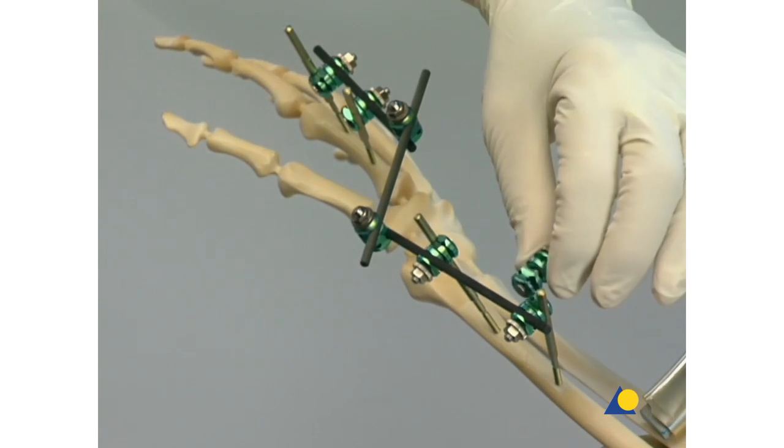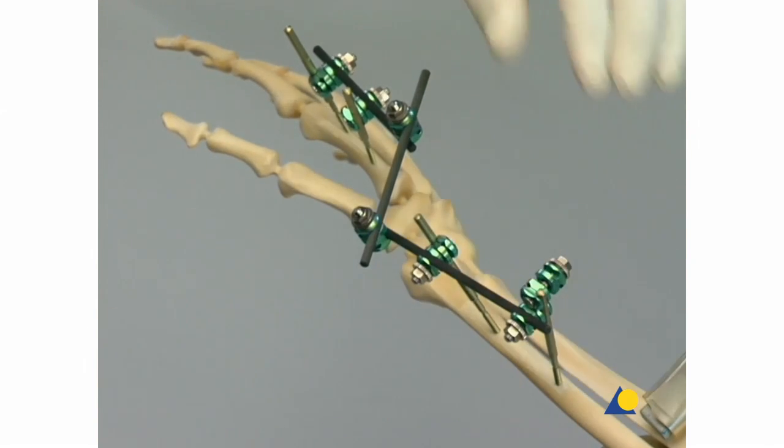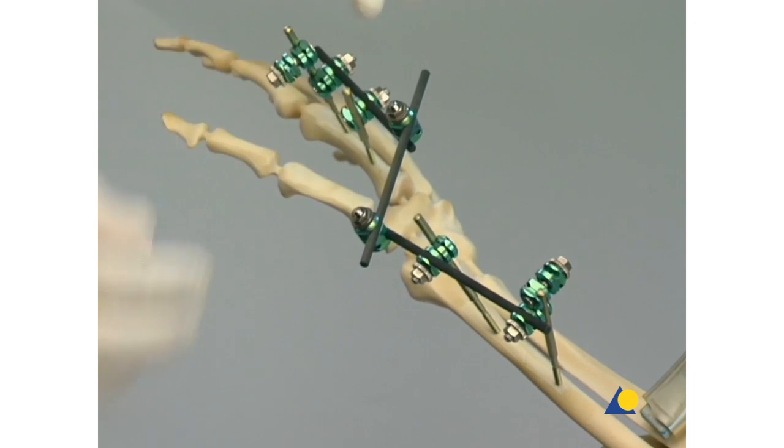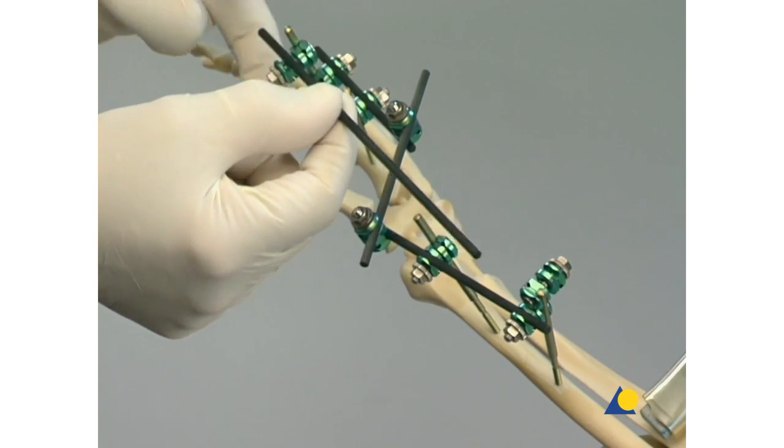Additional stability can be provided by a neutralization rod. It is sufficient to attach the rod to one Schanz screw in each main fragment.